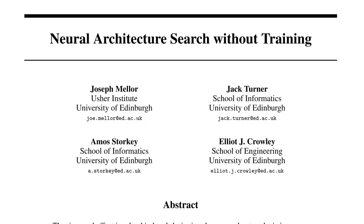Today we're looking at "Neural Architecture Search Without Training" by Joseph Meller, Jack Turner, Amos Starkey, and Elliot J. Crowley. On a high level, this paper performs neural architecture search by looking at the correlation matrices of the Jacobian of the data when you pass it through the network at initialization. If the Jacobian is very correlated, the network is bad; if it's very uncorrelated, the network is good.